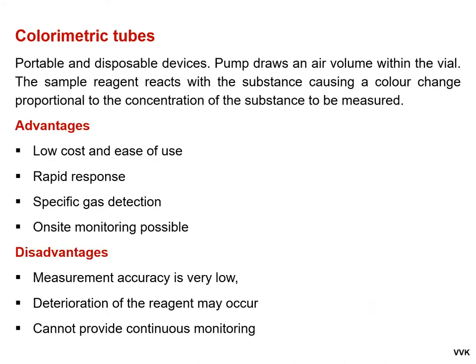Colorimetric tubes are portable and disposable devices. A pump draws air volume through the tube, where a sample reagent reacts with the substance causing a color change proportional to the concentration of the substance measured. They are inexpensive and easy to use, provide rapid response, allow specific gas detection, and work at higher concentration levels, enabling on-site monitoring. Drawbacks include very low measurement accuracy, possible deterioration of the reagent during sampling, and inability to be used for continuous monitoring.